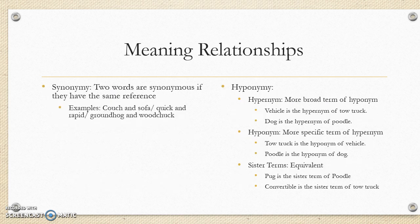There are different meaning relationships. We have synonymy, hyponymy, and antonymy. Synonymy is when two words are synonymous if they have the same reference — so couch and sofa, quick and rapid, groundhog and woodchuck.